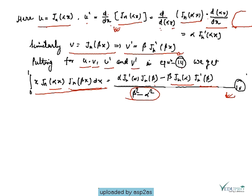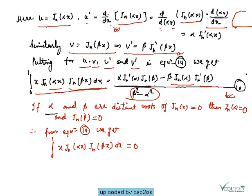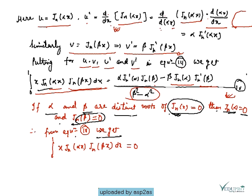Now if alpha and beta are two distinct roots of Jn(x) = 0, then Jn(α) = 0 and Jn(β) = 0. By putting these into equation 4, we have ∫₀¹ x·Jn(αx)·Jn(βx)dx = 0, which proves the orthogonality condition.